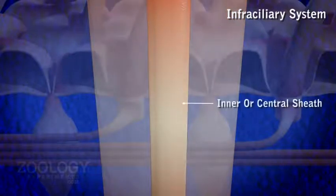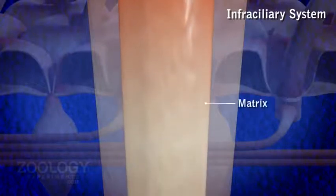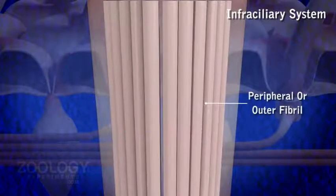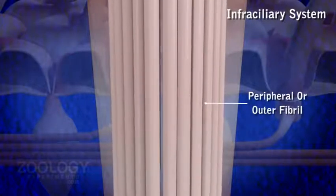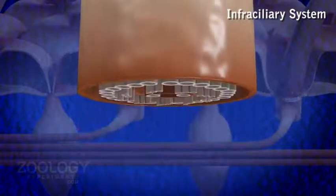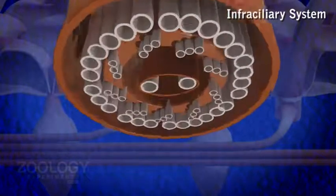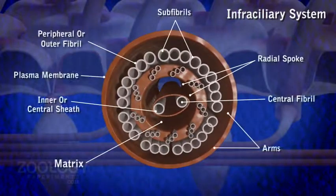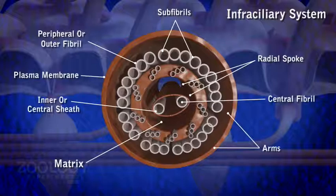4. Kinetodesmata: Associated closely with the basal body of cilia and lying in the ectoplasm is a system of specialized striated fibrils called kinetodesmal fibrils. A single fibril arises from the basal body of each cilium and runs anteriorly, somewhat tapering along the course.